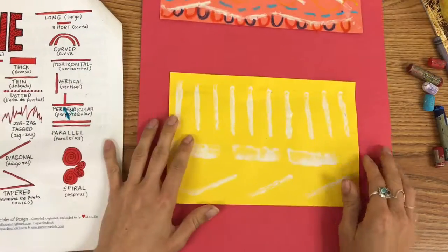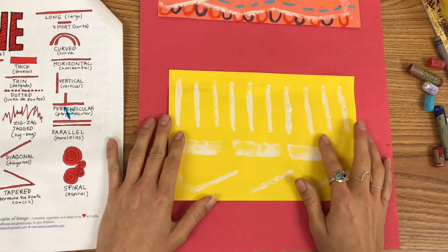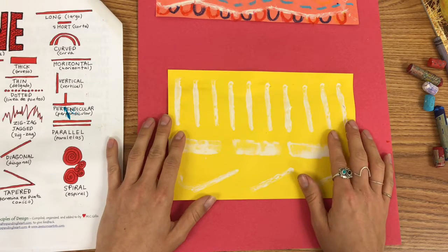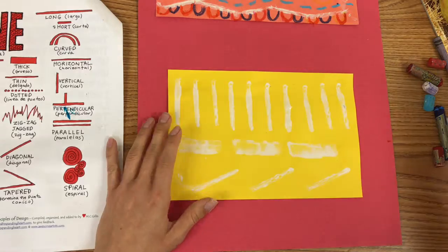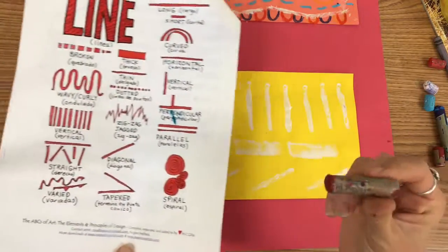Now I'm ready to work on my other print. What could I add to this one? What kind of lines haven't I used yet?